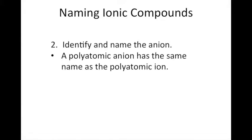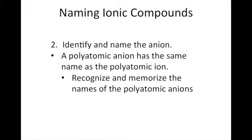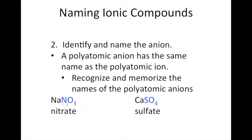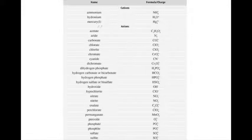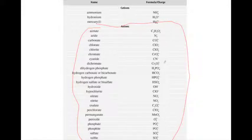If the anion is polyatomic, we give it the same name as the polyatomic ion, which requires memorization. In NaNO3, we recognize NO3 minus as a polyatomic anion called nitrate. In CaSO4, SO42 minus is called the sulfate ion, so the anion is named sulfate. Make flash cards or use whatever method works for you — be sure to memorize the names, chemical formulas, and charges on all polyatomic anions.